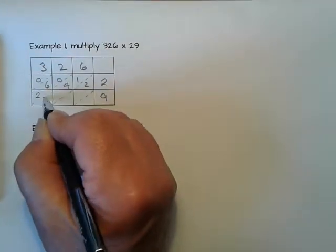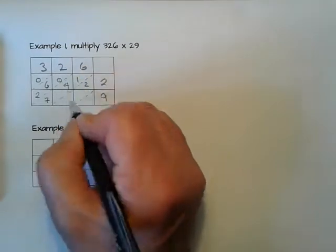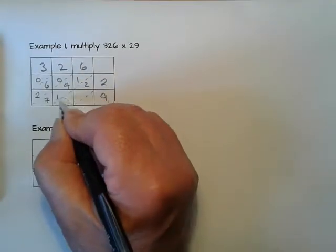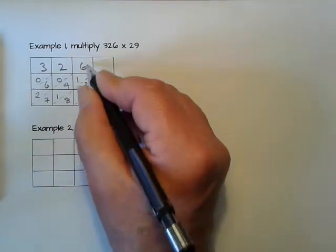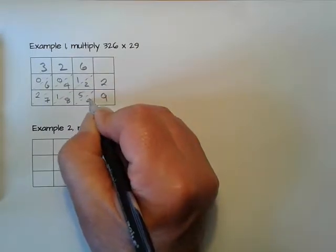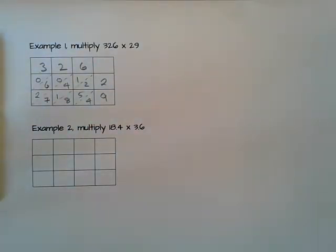3 times 9 is 27. 2 times 9 is 18. 6 times 9 is 54. Now all I do is add up along the diagonals.